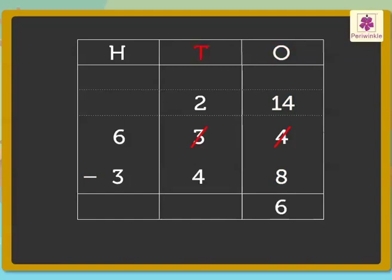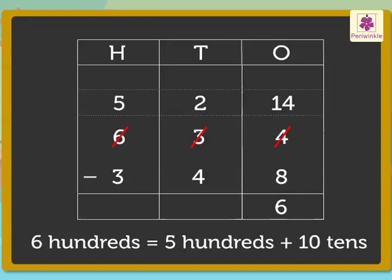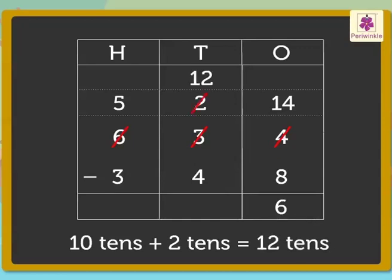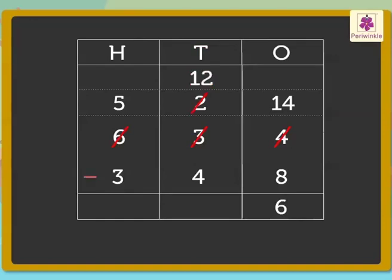Next, subtract the tens, that is 2 and 4. As 2 is smaller than 4, we regroup 6 hundreds as 5 hundreds plus 10 tens. We have 10 plus 2 is equal to 12 tens. Therefore, 12 minus 4 is equal to 8 tens. Lastly, subtract the hundreds: 5 minus 3 is equal to 2. Bingo!